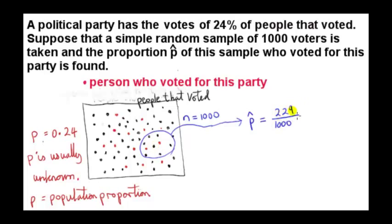Let's suppose that we found that 229 of them voted for this party. If we work this out, the estimate for the population proportion P hat is 0.229.